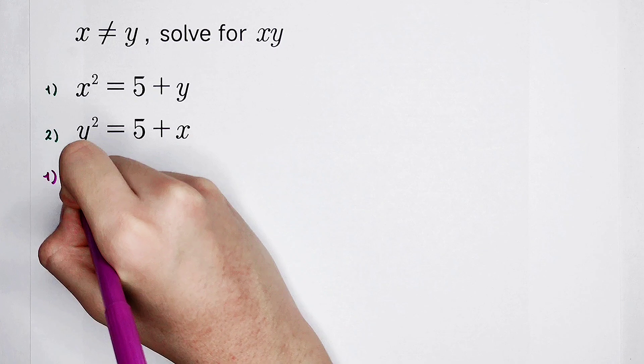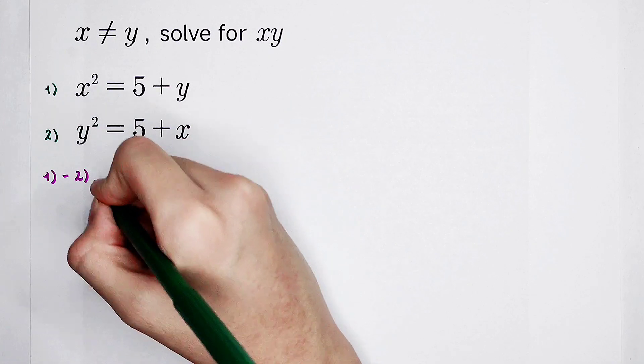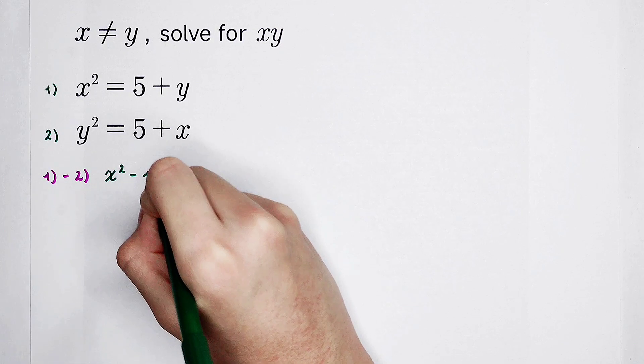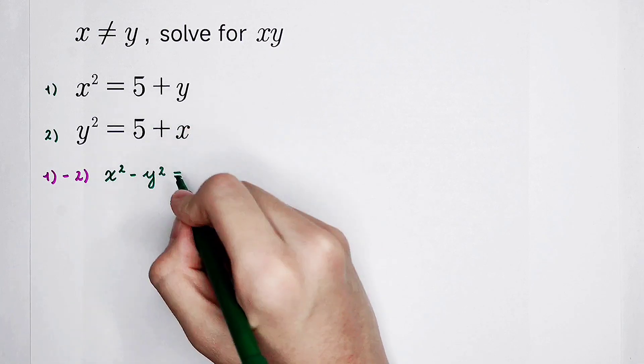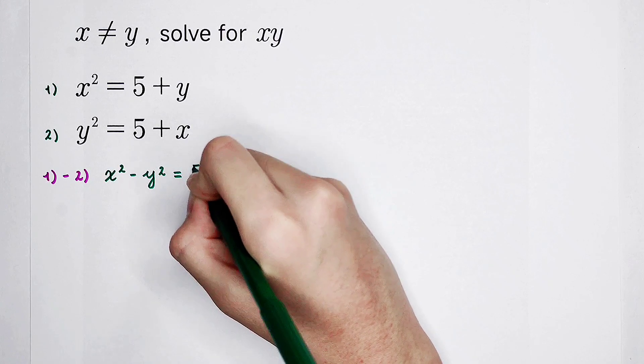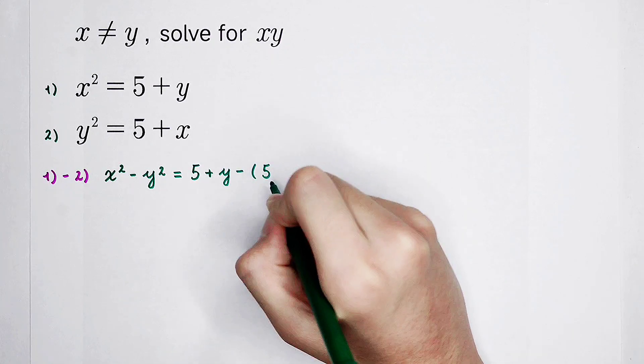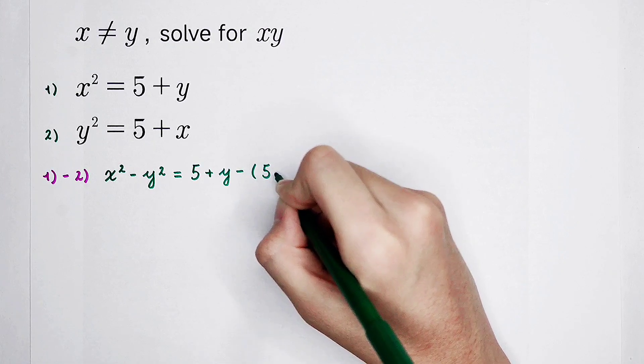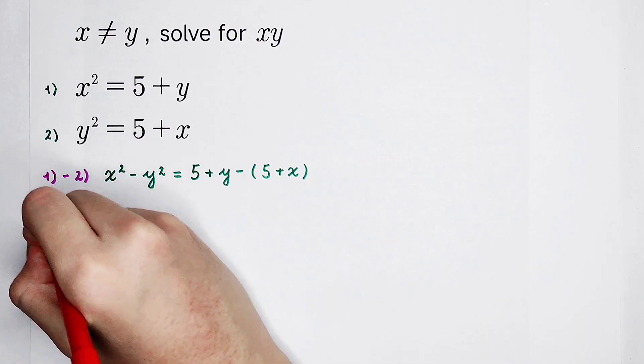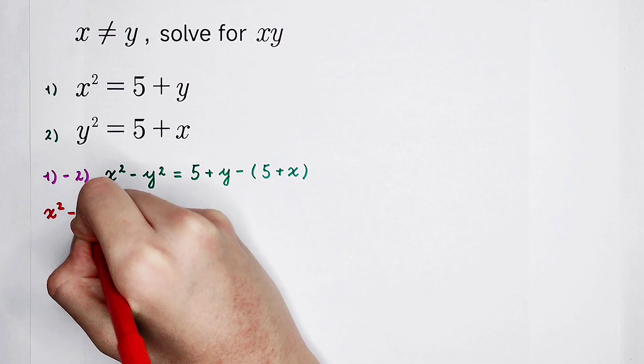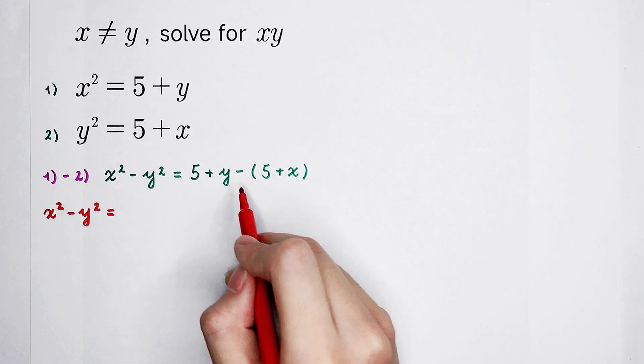The first equation minus the second equation. The left side is x squared minus y squared. And what about the right side? The right side is 5 plus y, then minus, with bracket, please notice it, bracket 5 plus x.